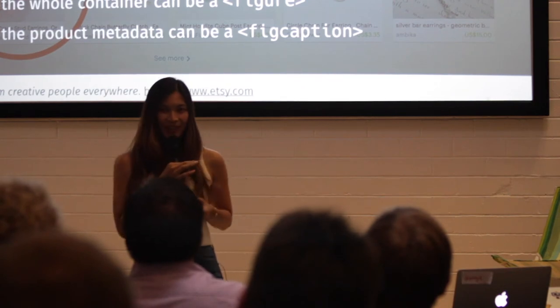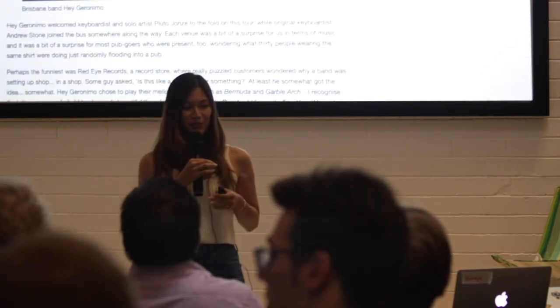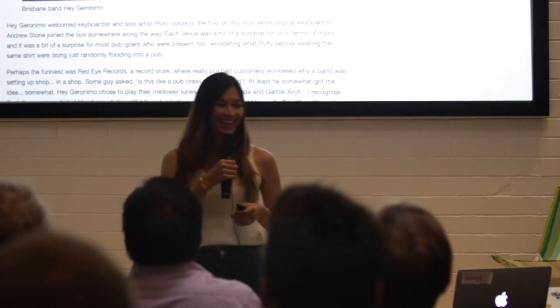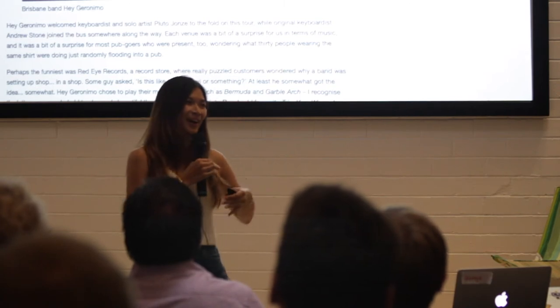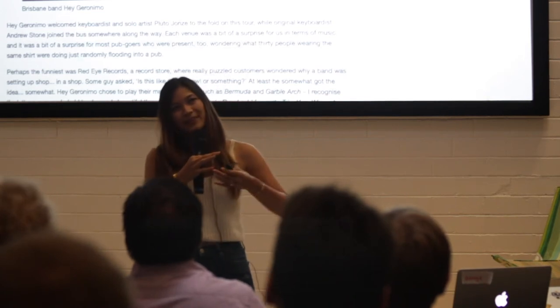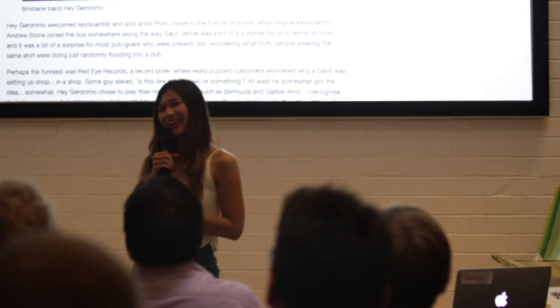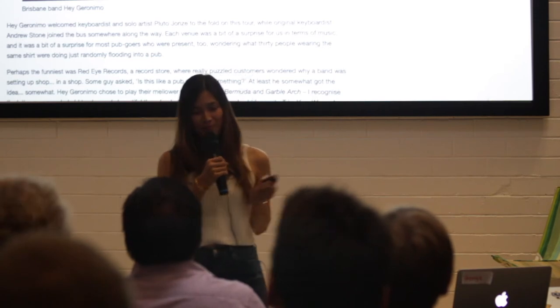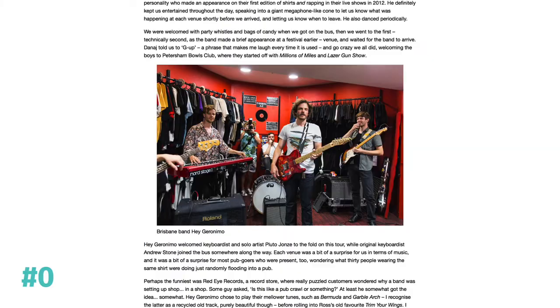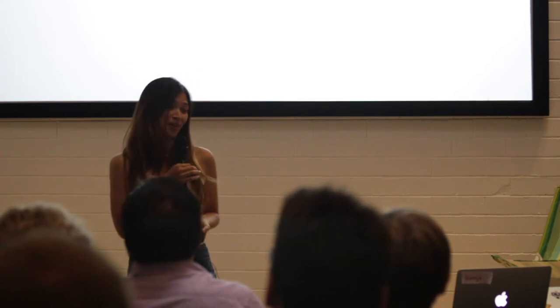So with that said, I'm not going to show too much more code, because this is about creativity. This is the fun part. In these examples I'm going to use photos that I've taken and copy from actual blog posts I've written. This is a photo of the Brisbane band Hey Dromo playing in a record store about a year ago. That was just showing you what a figure and figcaption looks like by default.